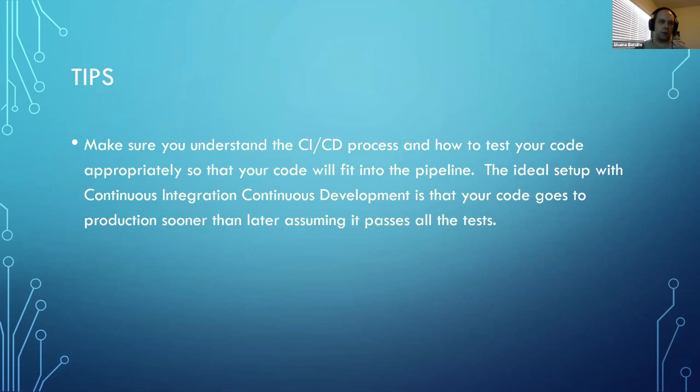One thing I wanted to also briefly touch on is just making sure that you understand CI/CD a little bit. You don't need to go into totally everything that it requires, but you want to make sure that your code is testable and that it will easily fit into a pipeline. The ideal setup with continuous integration, continuous development - for anyone who doesn't know what CI/CD stands for, it's continuous integration, continuous development. The ideal setup for that is that when you have finished testing your code and you put your PR up, someone approves the PR, it then goes through a series of automated steps and automated testing and assuming it passes everything, it goes right into production without requiring any manual intervention.